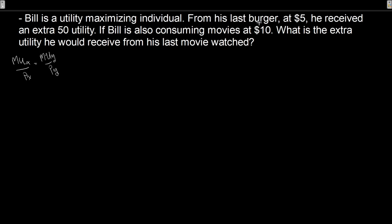We have burgers. From his last burger at $5, he received extra utility of 50 — so 50 extra utility. Extra utility for an extra unit is marginal utility. If Bill is also consuming movies at $10, what is the extra utility he would receive from the last movie watched? Let's update our equation: marginal utility of burgers over price of burgers equals marginal utility of movies over price of movies.